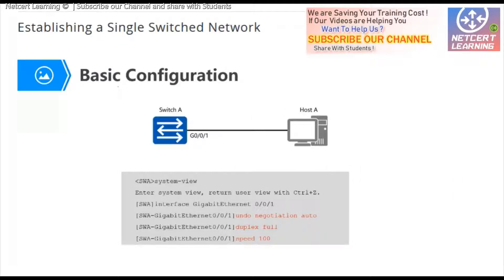This is the basic operation of the switch — forwarding data and building the MAC address table. This mechanism works by default; no configuration is needed. The original Ethernet ran at 10 Mbps. Then we developed Fast Ethernet at 100 Mbps. Nowadays, the most widely used speed is 1 Gbps. Of course, there is also 10 Gbps and higher.